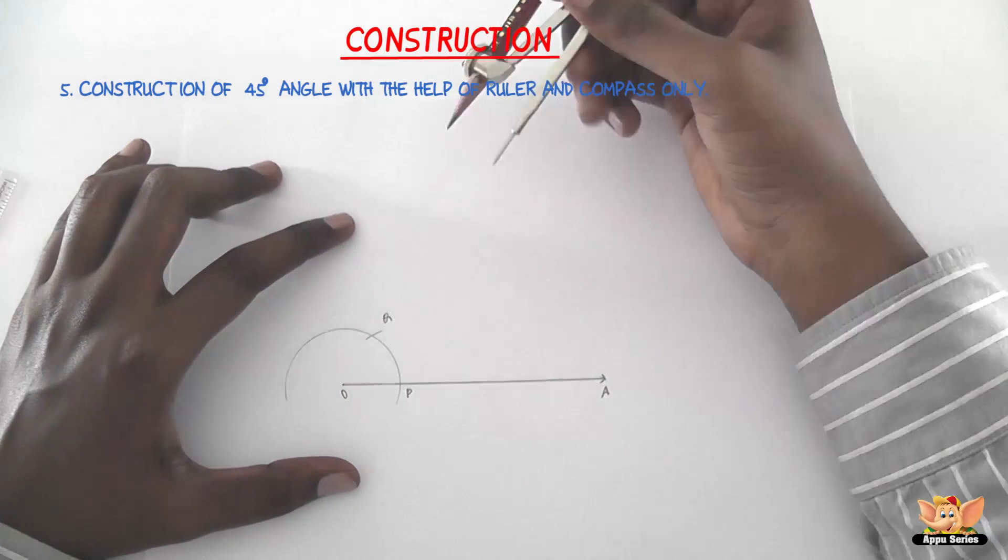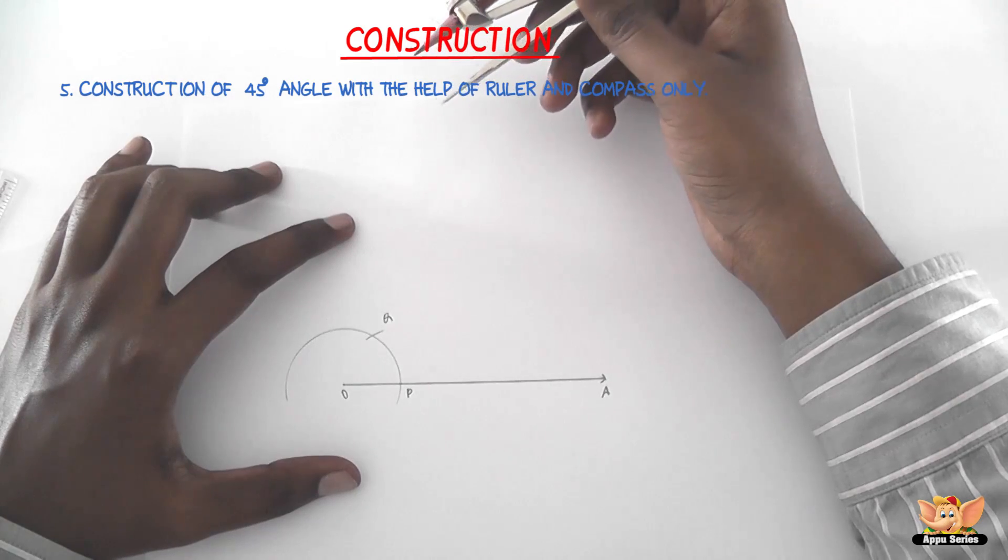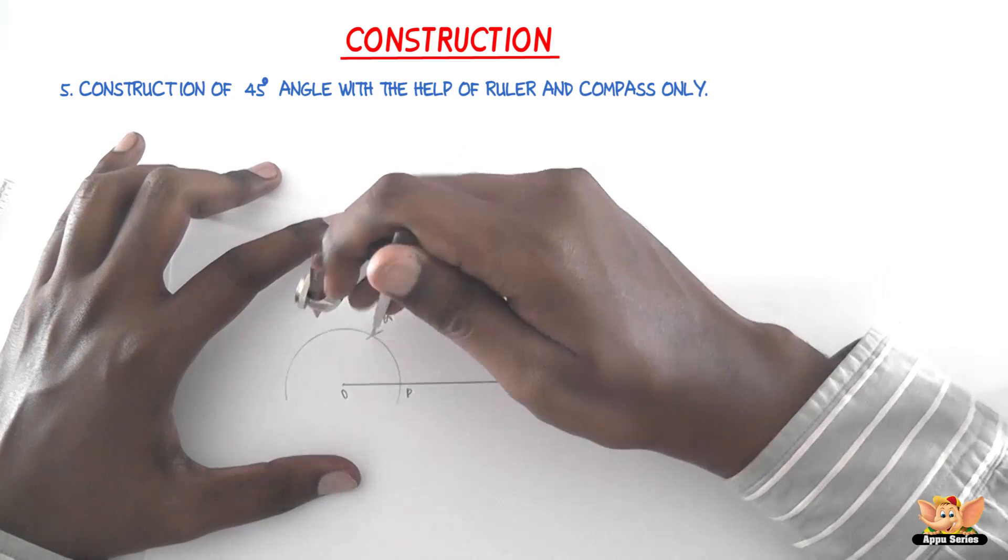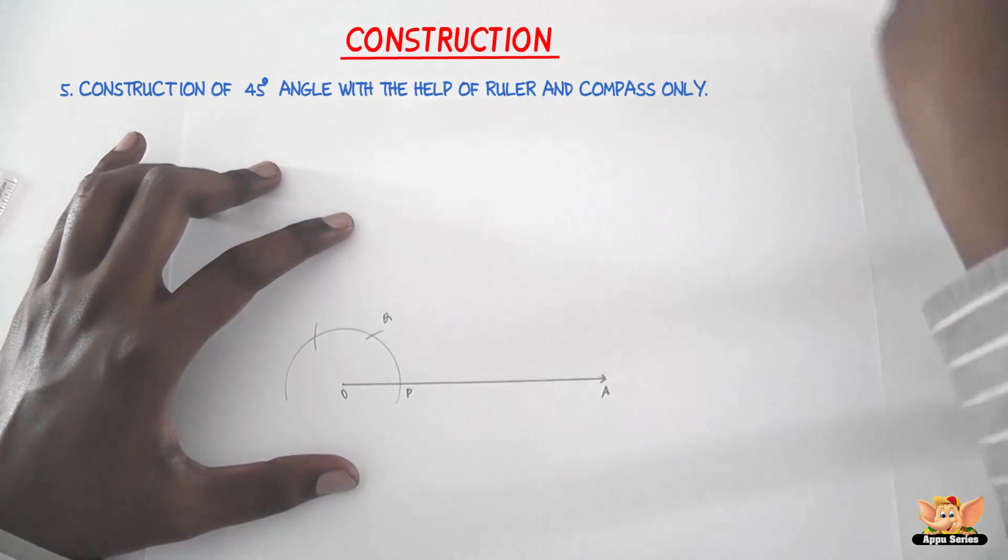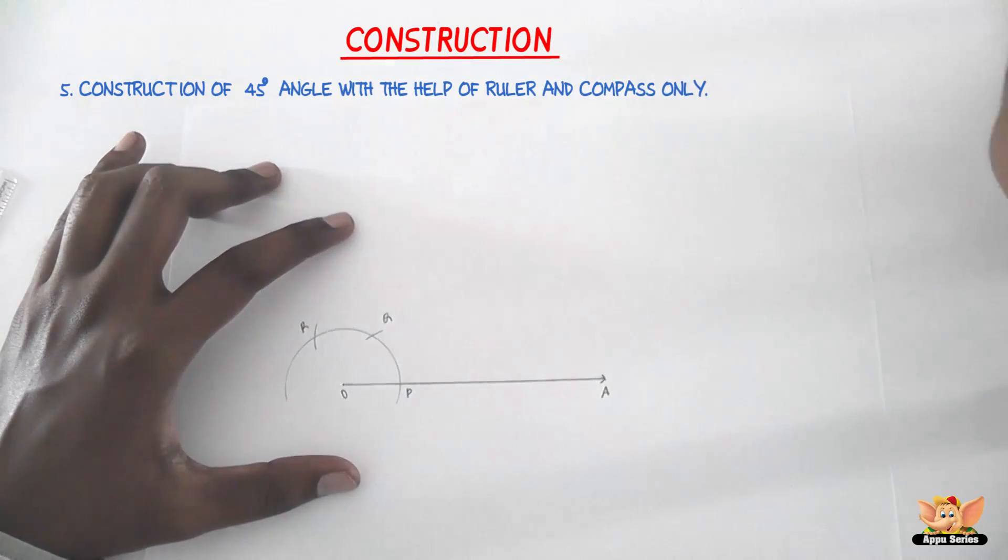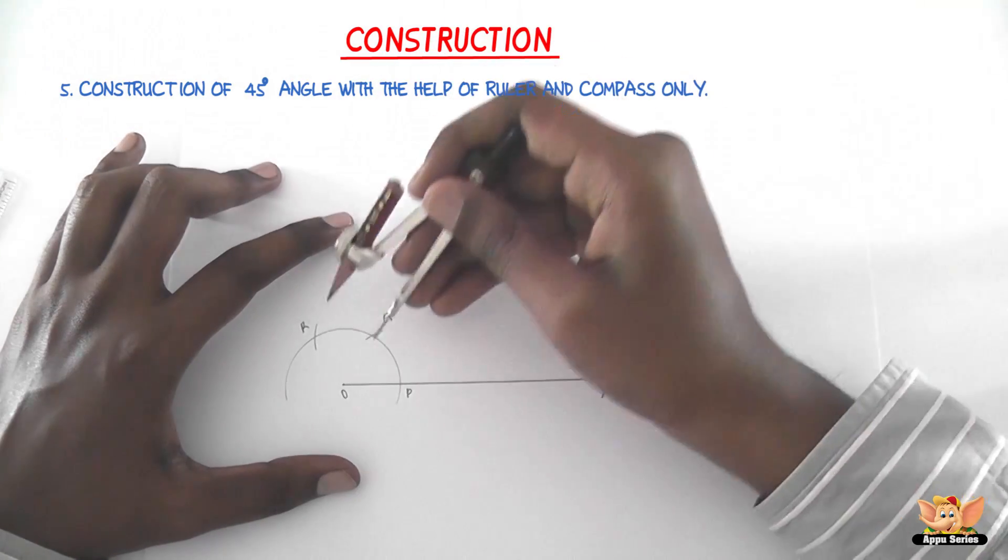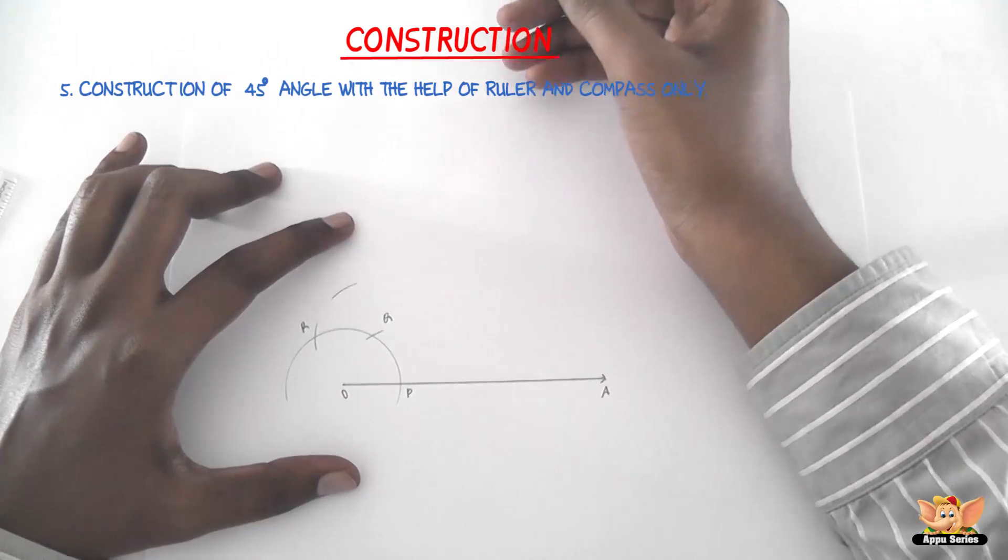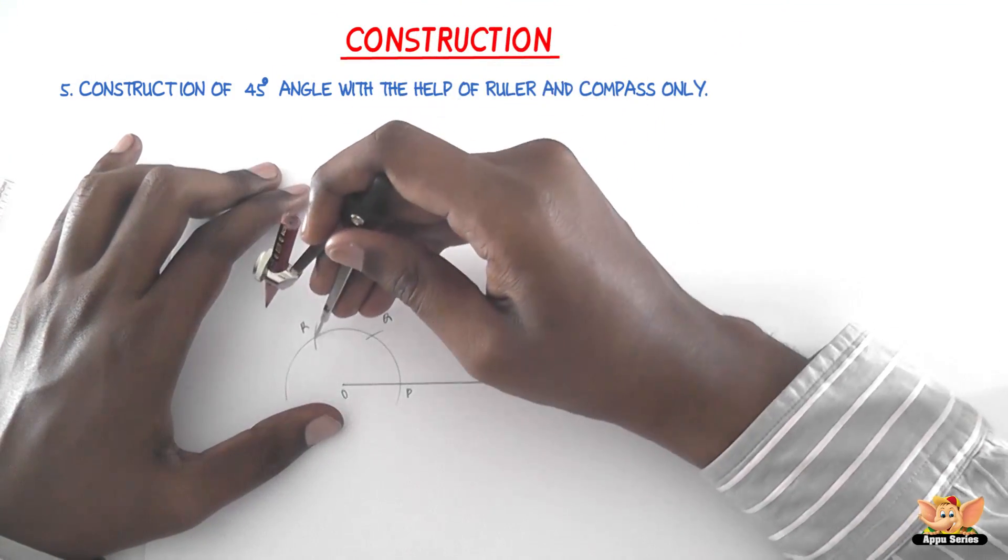Now the next step is with Q as center and same radius, draw another arc and name it R. And now with R as center and the same radius, draw another arc such that it cuts the arc that we just drew from Q.